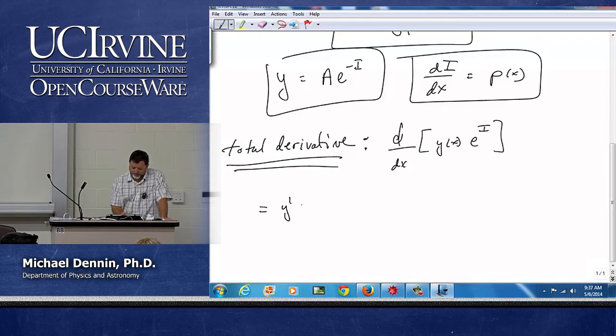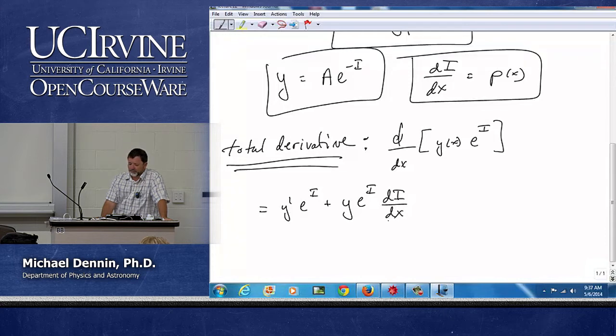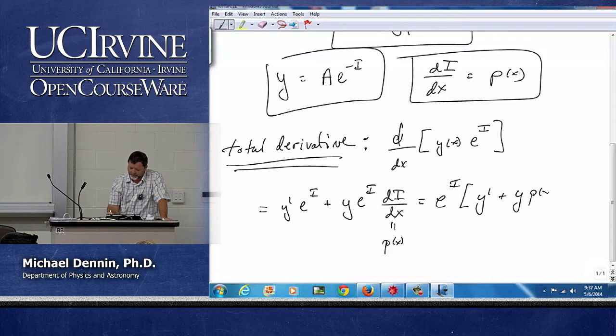If I get y prime e to the i plus y e to the i di dx. And what do you notice about this? And what else does this then look like? So this is p of x. So what does this equation look like? The original one with e to the i. So I have e to the i times y prime plus y p of x.